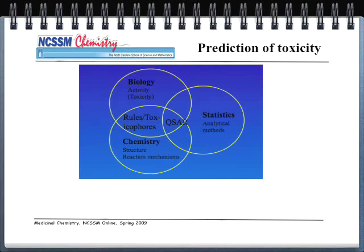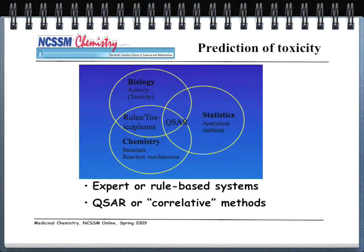The last part of ADMET is toxicity prediction. To predict toxicity, we look at chemistry, structure, and reaction mechanisms, as well as biological activities like side effects. All of this comes together through QSAR, which you worked on last week. We apply statistics and analytical methods to this data using either expert or rule-based systems, or QSAR correlation methods, to predict the toxicity of a particular compound.